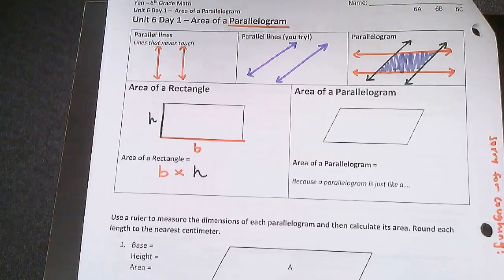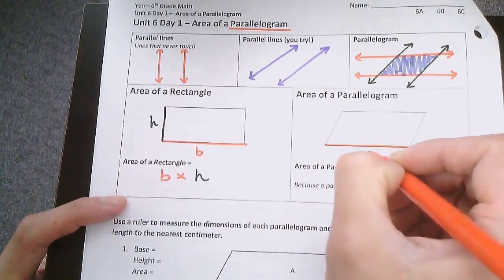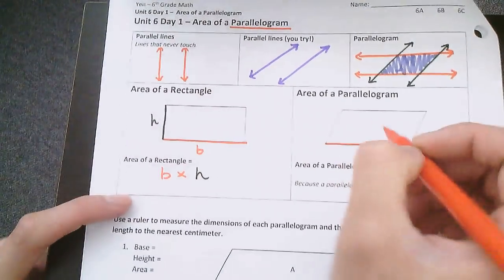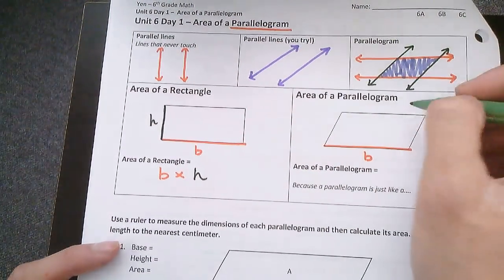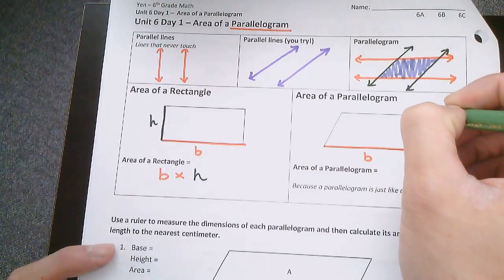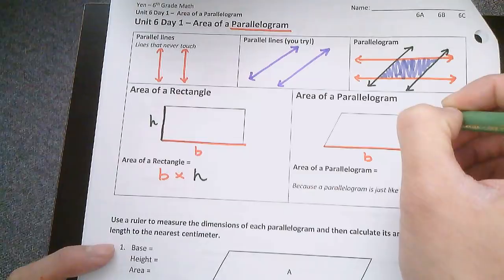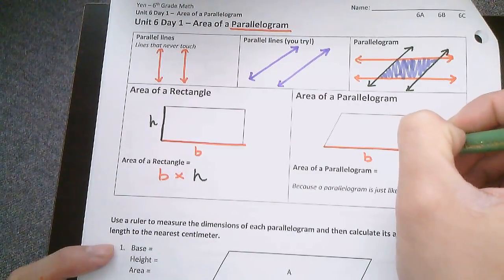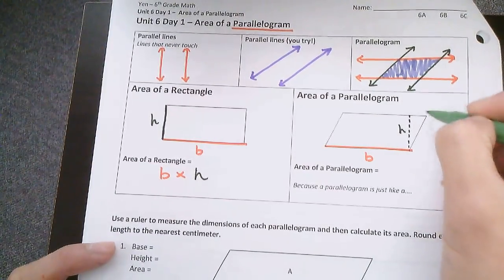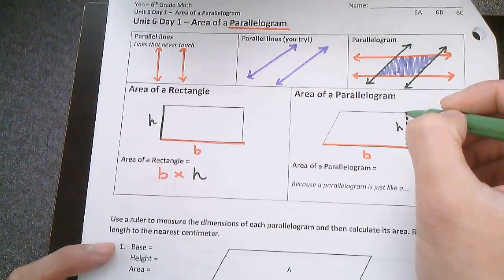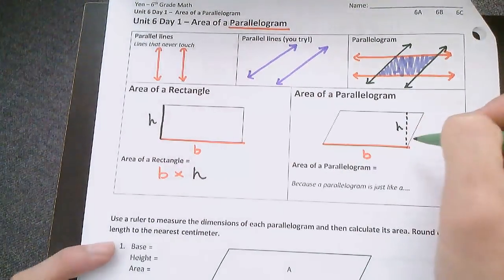For a parallelogram, we also have our base. And the height of the parallelogram from the top of the parallelogram to the bottom. Draw a line. This is the height. Not this diagonal line here, but going straight from the top to the bottom. That's the height.